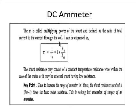We derive this multiplying power because numericals may be asked regarding the DC ammeter. Remember the formula: multiplying power M = I / I_M = 1 + R_M / R_SH.